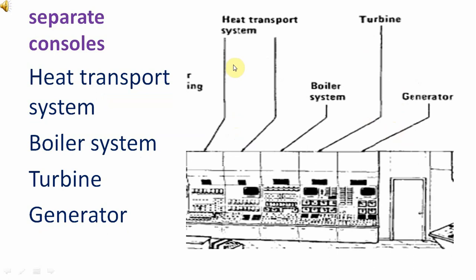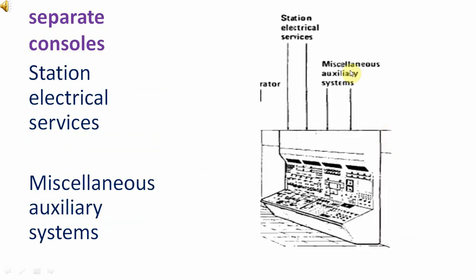Additional consoles include: heat transport system console, boiler system console, turbine system console, generator console, station electrical services console, and miscellaneous auxiliary systems console.